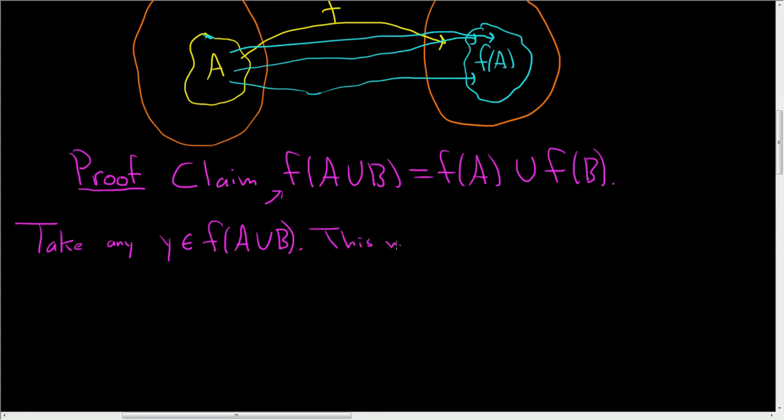Well, this means there exists an element, let's call it X, which lives inside the union, such that F takes X and sends it to Y. That's exactly what it means for Y to be in this set.